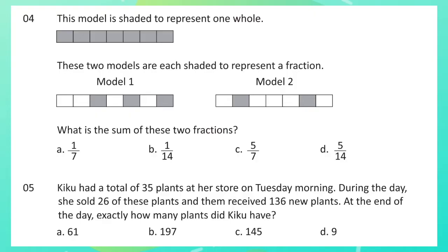Question 5: Kiku had a total of 35 plants at her store on Tuesday morning. During the day, she sold 26 of these plants and then received 136 new plants. At the end of the day, exactly how many plants did Kiku have?